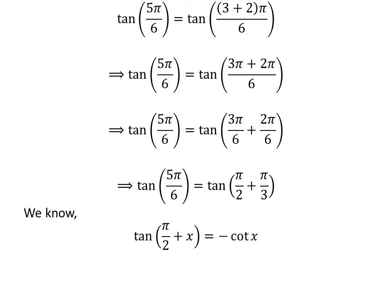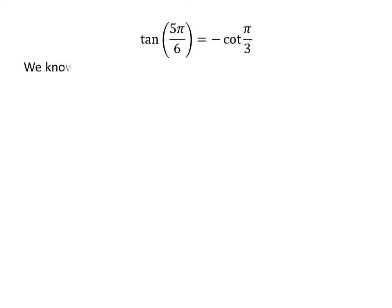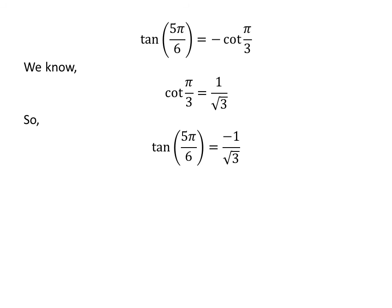We know the famous trigonometry identity: tangent of half of pi plus x is equal to minus cotangent of x. The proof of this identity has been explained in the video appearing in the upper right corner, and the link is also given in the description. Applying this identity gives us tangent of 5 times pi upon 6 is equal to minus cotangent of pi upon 3. Since cotangent of pi upon 3 is equal to 1 upon square root of 3, tangent of 5 times pi upon 6 is equal to minus 1 upon square root of 3.